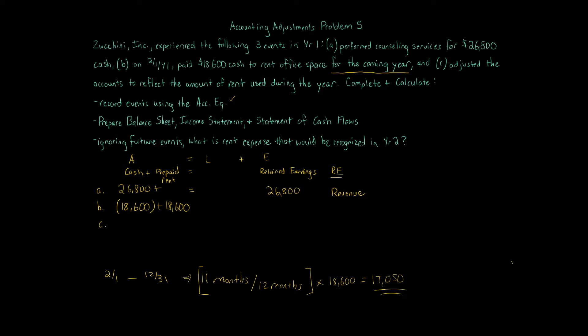Now that's being used up because we're saying we adjusted at the end of the year, at the end of year one, to reflect that the prepaid rent has been reduced. So we're going to reduce prepaid rent by $17,050. And then retain earnings. We have rent expense. This is an expense. Remember, prepaids turn into expenses. So we have a rent expense amount of $17,050, and increase in expense decreases retained earnings. So our equation balances.